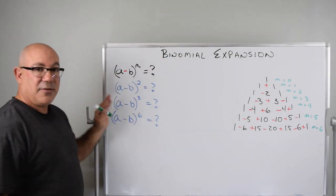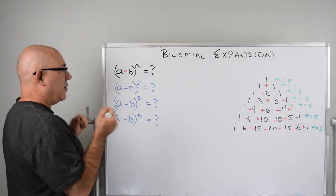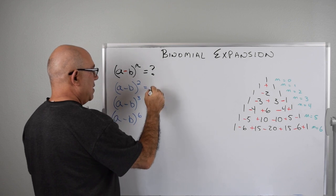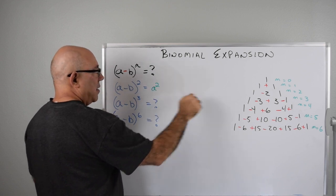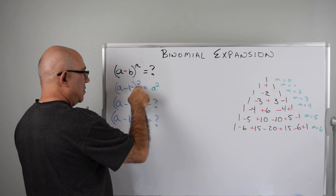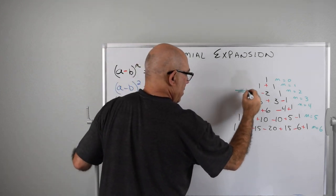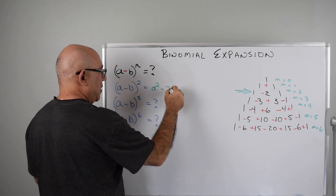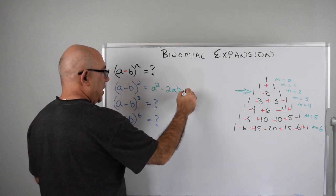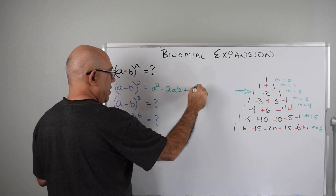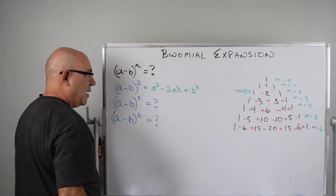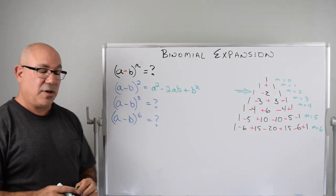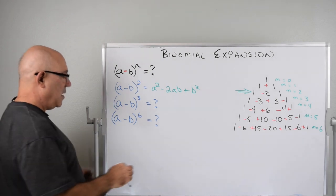Now solving these problems is a breeze. For (a minus b) squared, we start with a squared, n is two, so our coefficient is one. Then minus two — a goes down one, b gets introduced — so minus two ab, plus b squared where a goes down to zero and b is squared. The full details are in the earlier video linked in the comments.